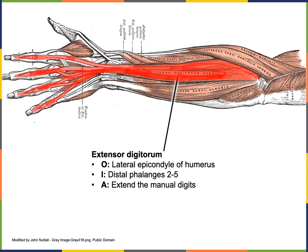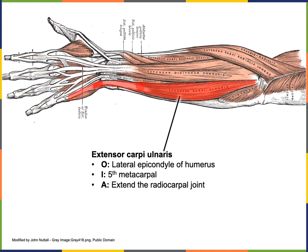Extensor digitorum also has its origin from the lateral epicondyle of the humerus. Its insertion is onto the distal phalanges of digits two through five, and its action is extension of the manual digits. Extensor carpi ulnaris likewise originates from the lateral epicondyle of the humerus — an origin shared by extensor carpi radialis brevis, extensor digitorum, and extensor carpi ulnaris. The insertion for extensor carpi ulnaris is the fifth metacarpal, and the action is to extend the radiocarpal joint.